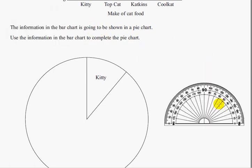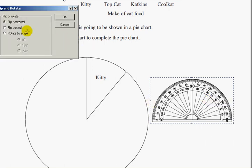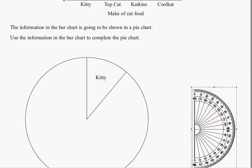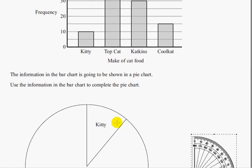OK, so we're going to need a protractor. Let's have a look. So the first slice is done for us, the only slice, and that is kitty. And kitty has 10 people. So let's do kitty first.